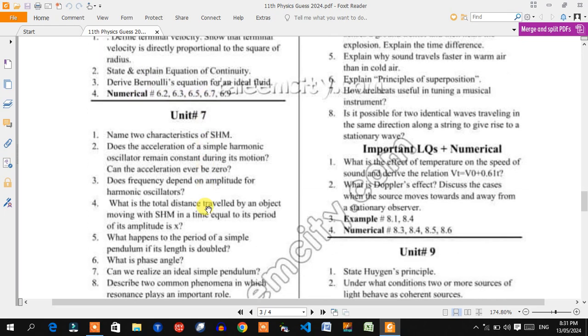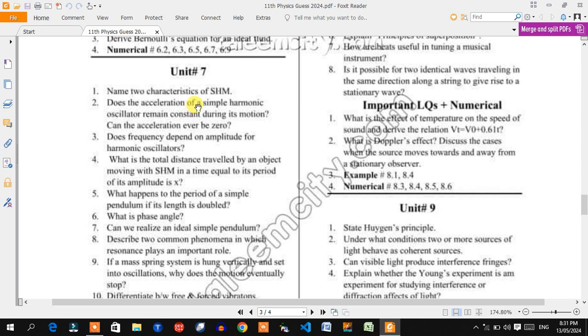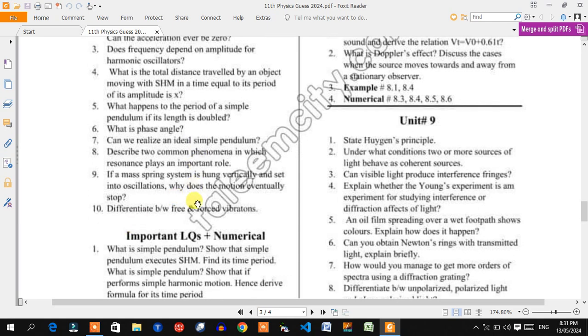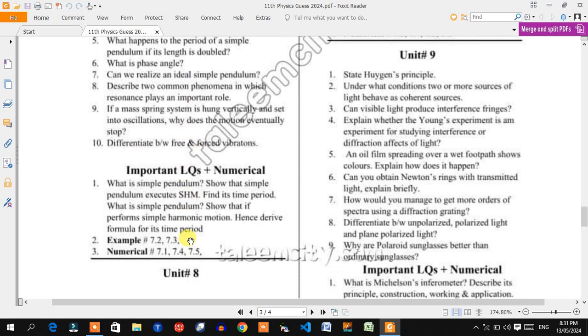Chapter seven is simple harmonic motion. This chapter has general questions - short and long. You have one long question. Examples are 7.2, 7.3, and 7.14 or 7.15.